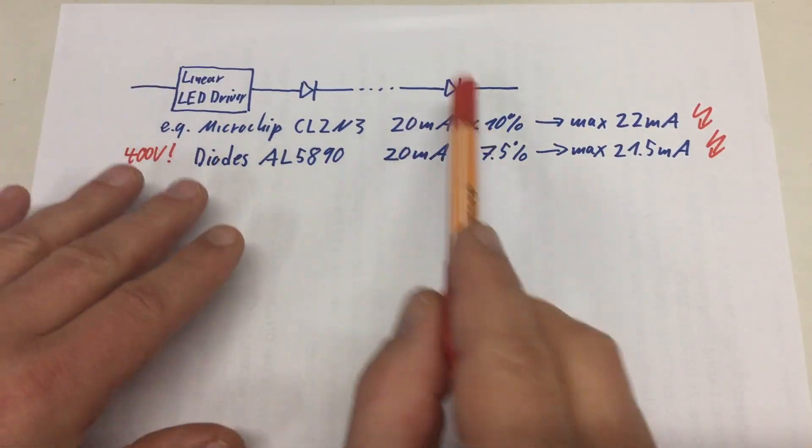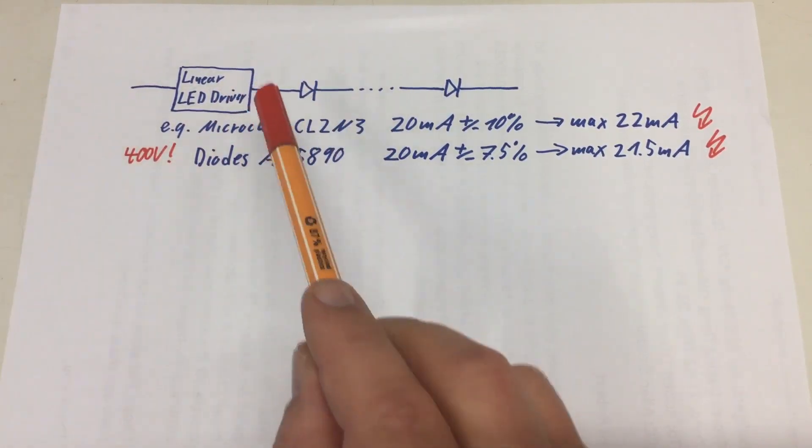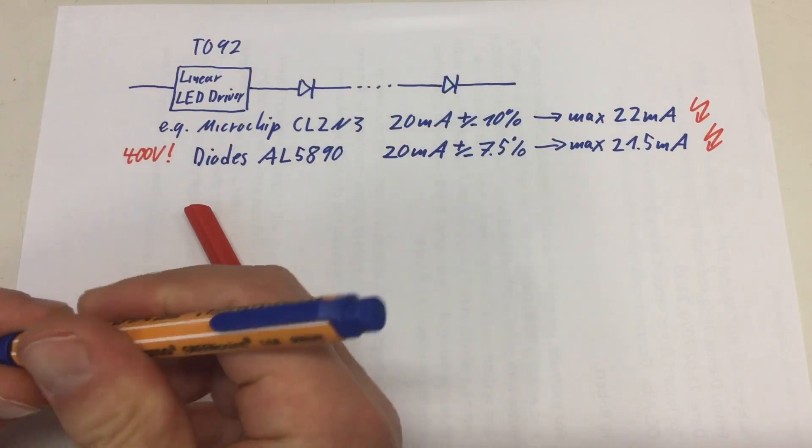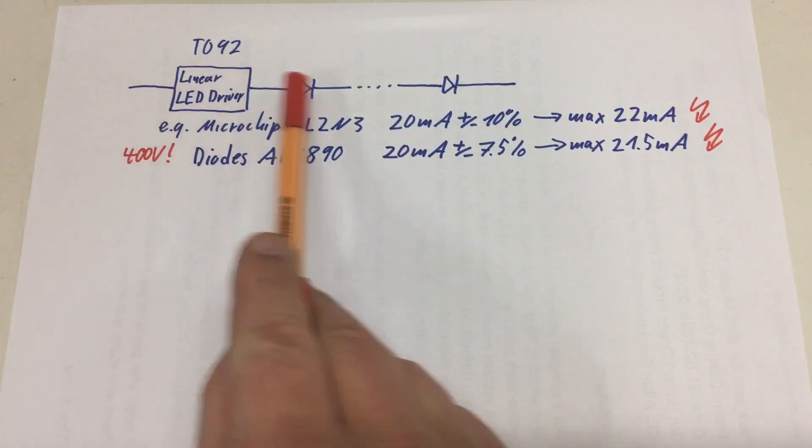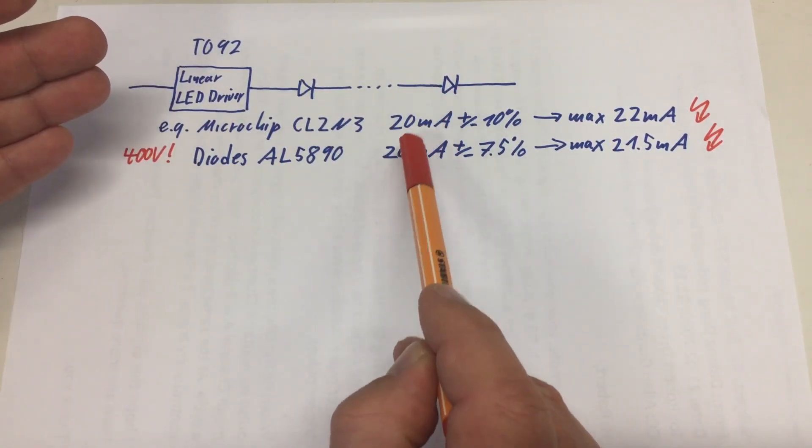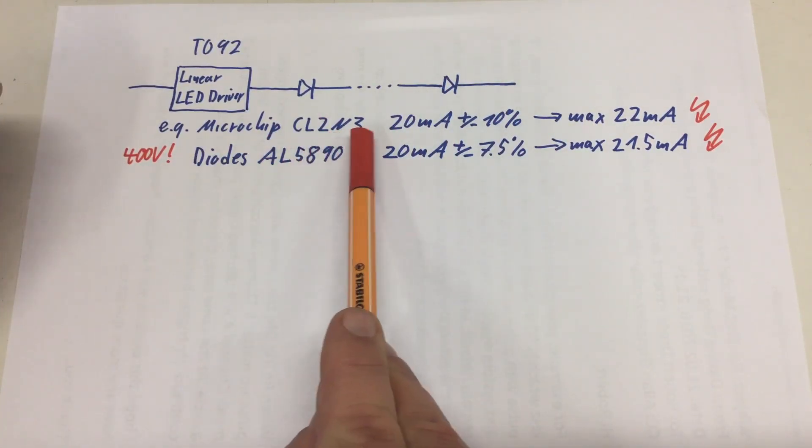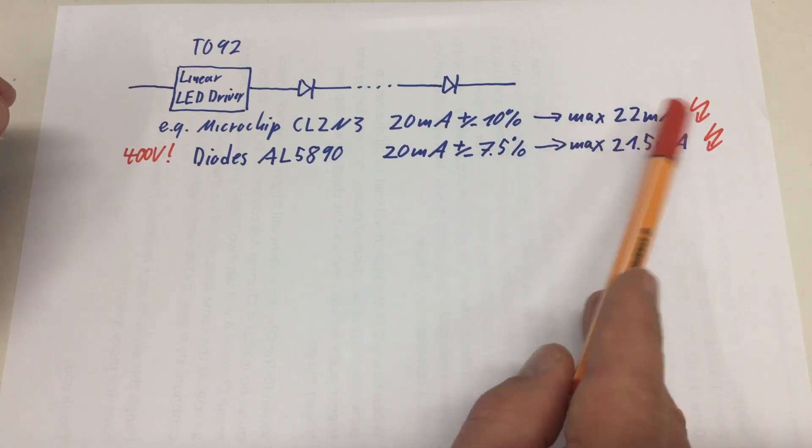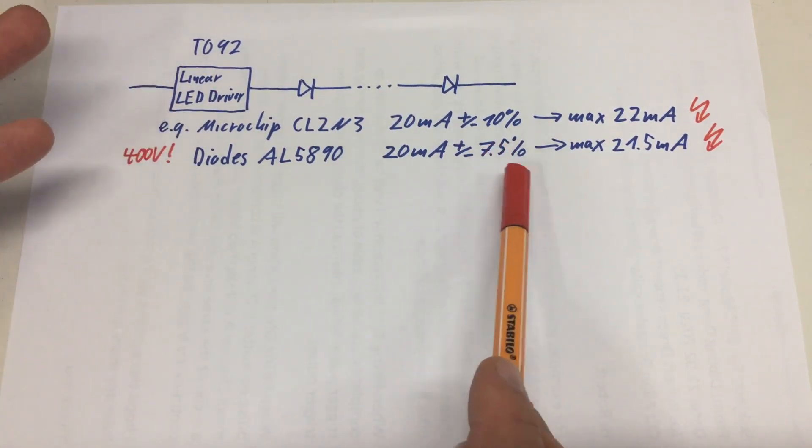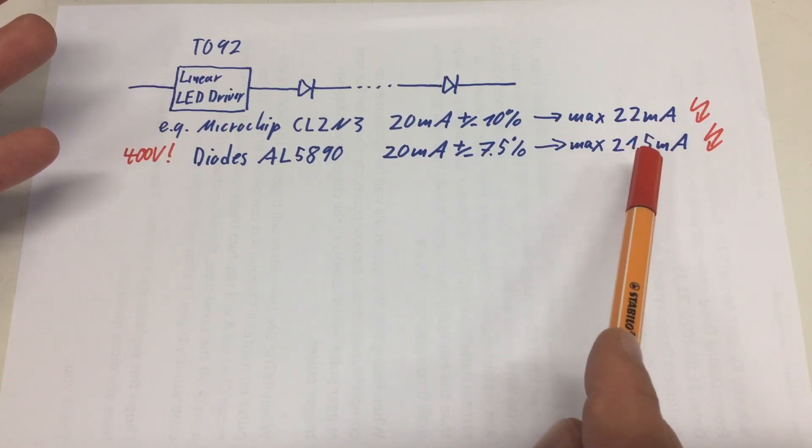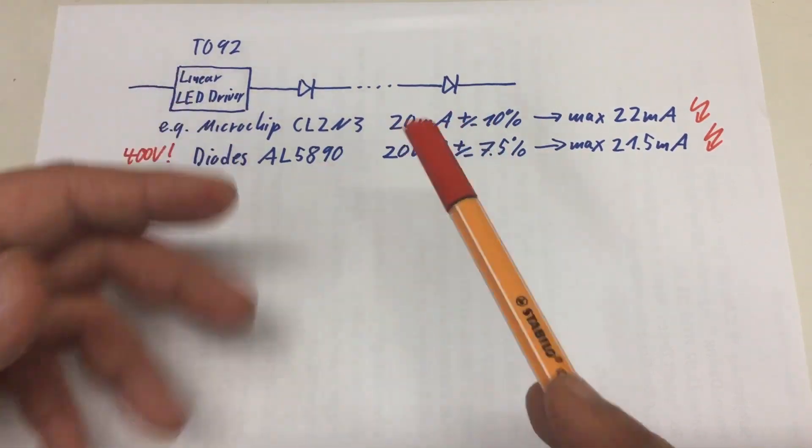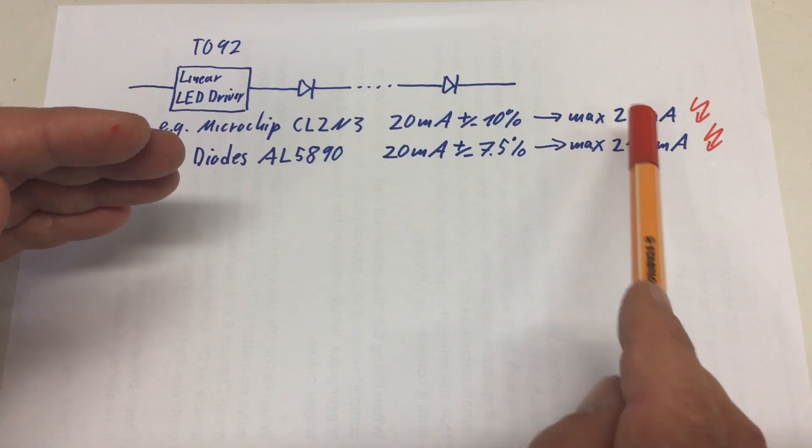My initial idea was to use a linear LED driver. These are really nice chips that come as SMD variants, but also in a small TO92 case with only two pins. These are basically constant current sources. But the problem here is you get them for 20 milliamps. For example, the microchip CL2N3 is plus minus 10% worst case, you end up at 22 milliamps. The diodes AL5890 is plus minus 7.5%, so worst case 21.5 milliamps. That's a little bit overdriving the LEDs, and obviously these are very cheap LEDs. They cannot take that for very long, I guess.